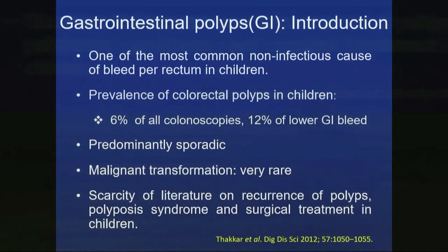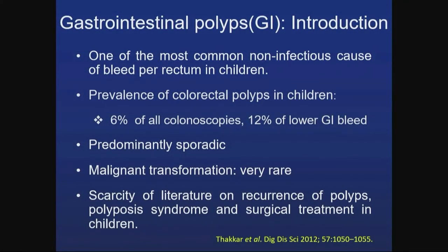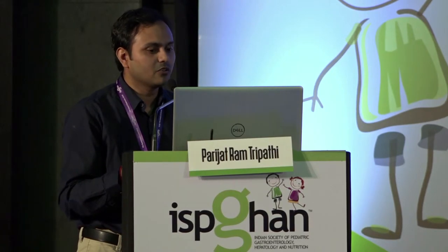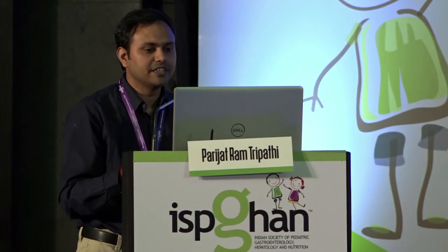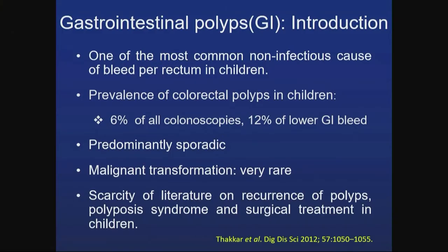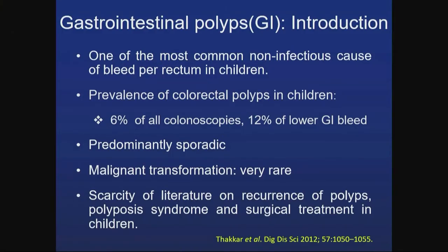Gastrointestinal polyps are one of the most common non-infectious causes of bleed per rectum in children. Prevalence of colorectal polyps is 6% among all colonoscopies and 12% when the indication is lower GI bleed. They are predominantly sporadic and malignant transformation in children is very rare. We aimed to study presentation and outcome of GI polyps in children, comparing clinical presentation, histology, and outcome among single polyp, multiple polyps, and polyposis syndrome patients.